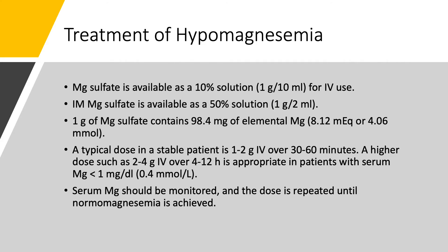Magnesium sulfate is available as a 10% solution: 1 gram per 10 mL for intravenous use — reminiscent of calcium gluconate. For intramuscular use in the United States (rarely used), it's available as a 50% solution: 1 gram in 2 mL. You wouldn't want to give a 10 mL IM injection; you only give 2 mL. One gram of magnesium sulfate contains 98.4 mg of elemental magnesium, or about 8 mEq and 4 mmol of magnesium.